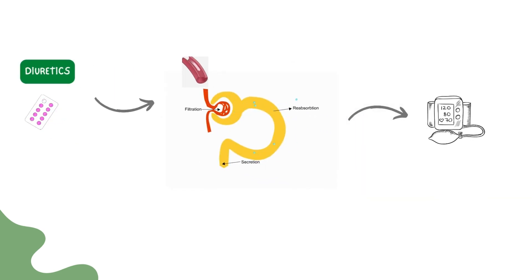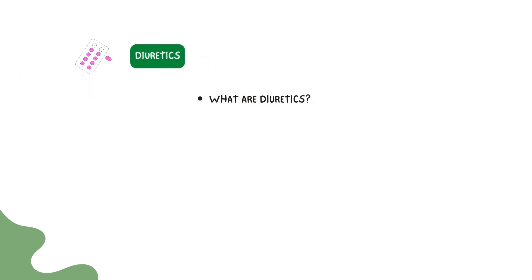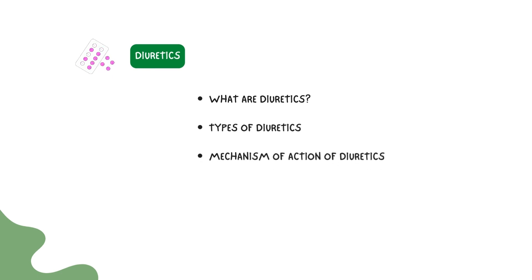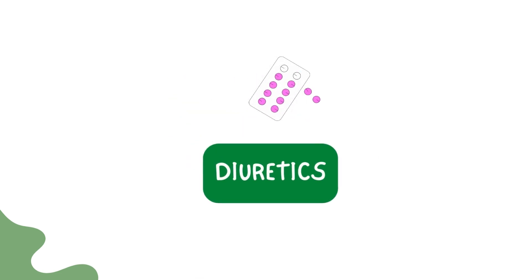This lowers blood pressure. Diuretics are used as the first line of treatment in patients with hypertension or high blood pressure. In this video, we will talk about diuretics, their types, mechanism of action, and the most used diuretics in clinical practice.